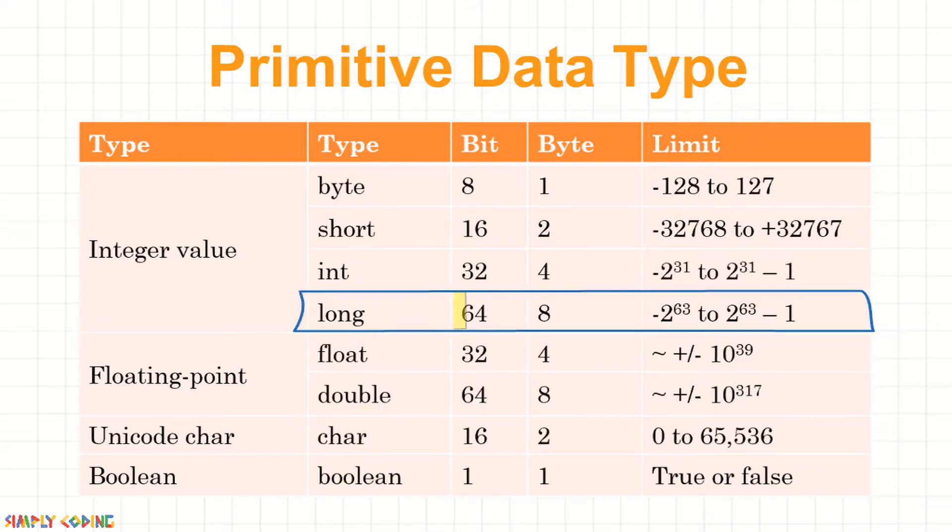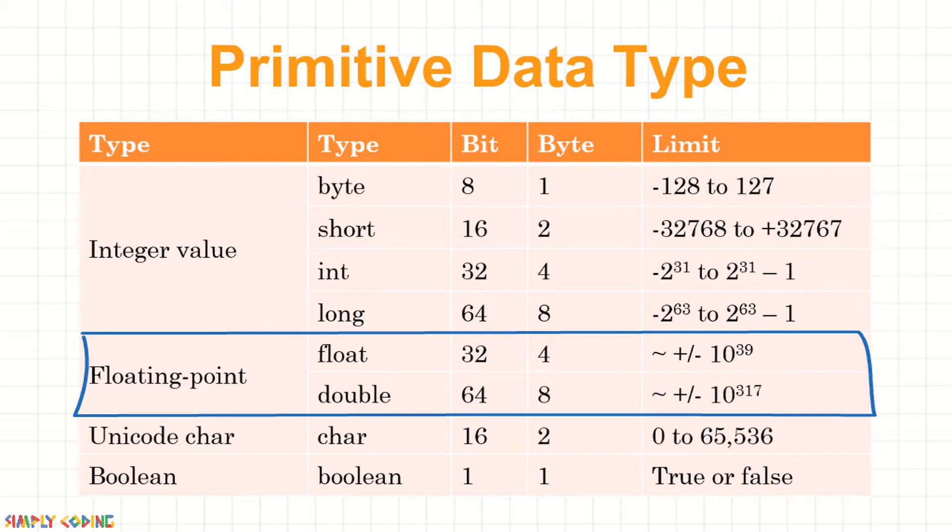long has 64 bits or 8 bytes and can take minus 2 raised to power 63 to 2 raised to power 63 minus 1. Float and double are fractional or floating point data types.